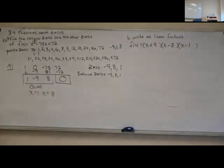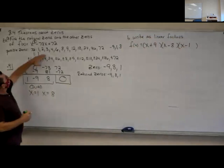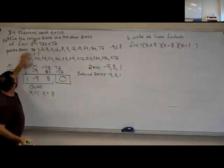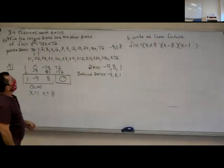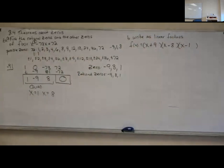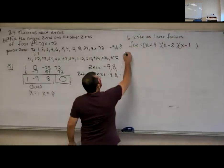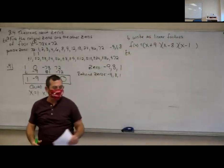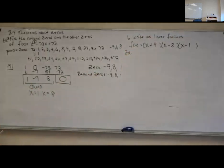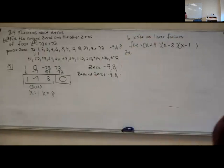So the trick on these — you're not going to know where to start, but you can find all the possible zeros and use a graph to help you a little bit. Any questions on that one? That's like the mountain top for this thing. Any questions online on that one?